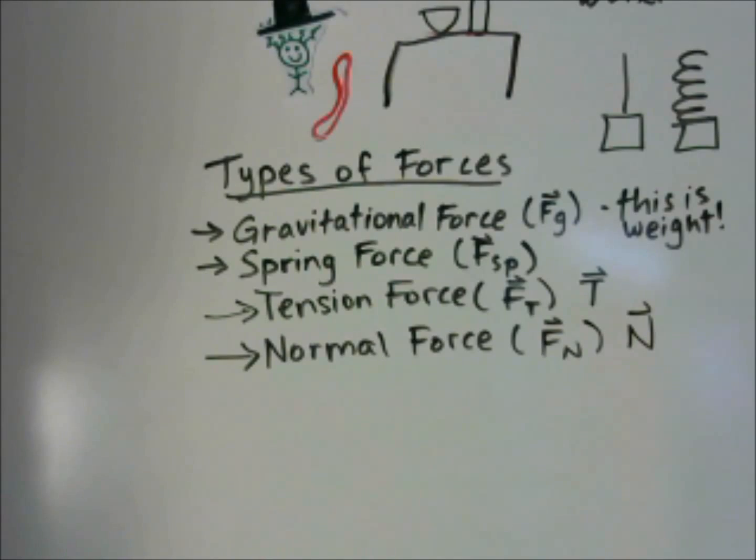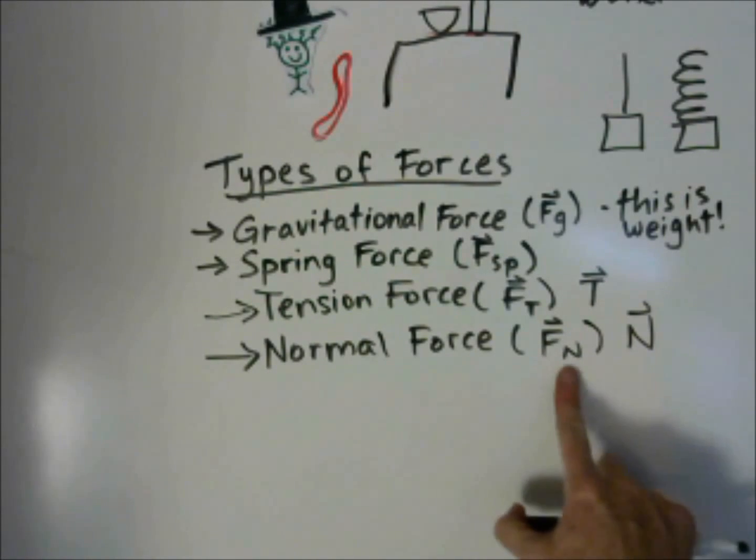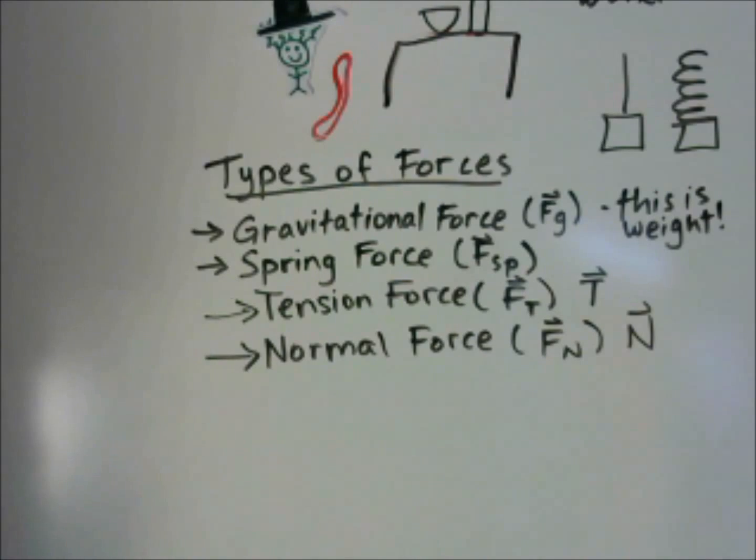We have the normal force. This can be written as F sub N, or sometimes as just a capital N. We're going to talk more about what the normal force is, but if you have an object on a table, the force that keeps the object from falling through the table is the normal force that the table pushes back on the object with.